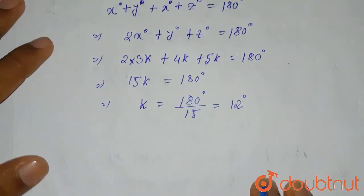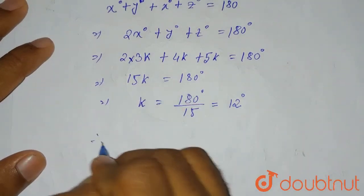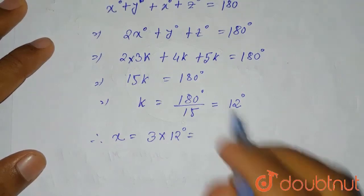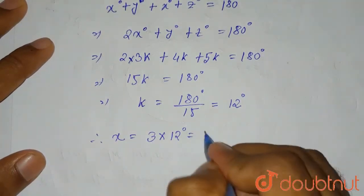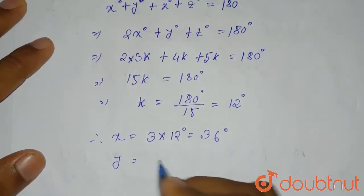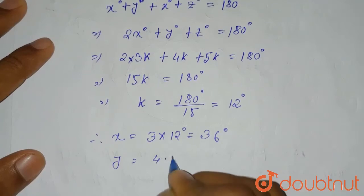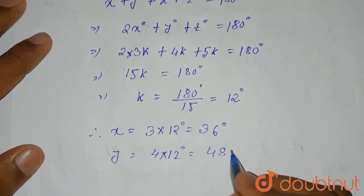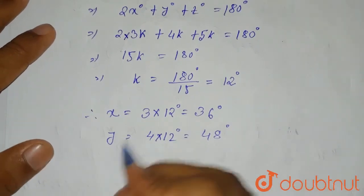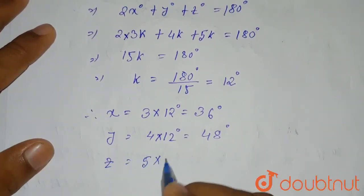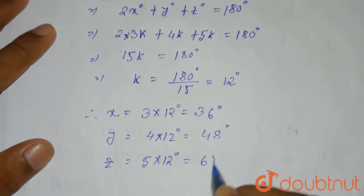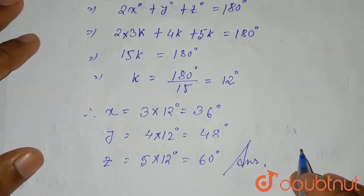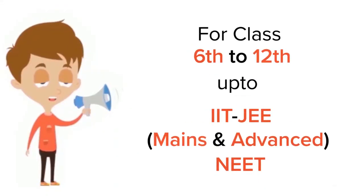Therefore, x = 3 × 12 = 36 degrees, y = 4 × 12 = 48 degrees, and z = 5 × 12 = 60 degrees. These are the required values of x, y, and z.